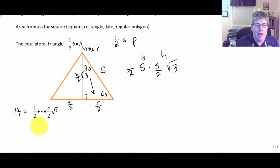Well, 1/2 S is the same as S over 2. So I have S over 2 times S over 2 times square root of 3.